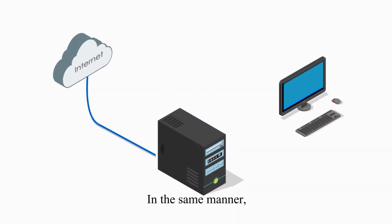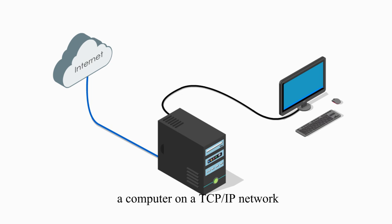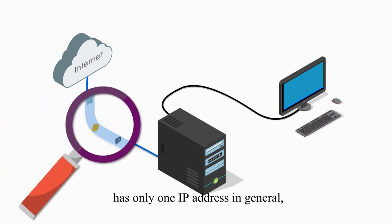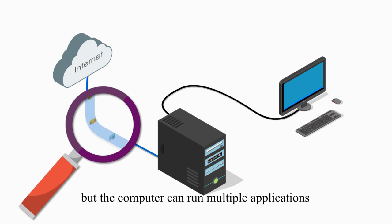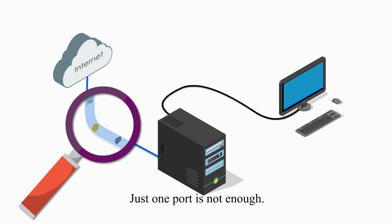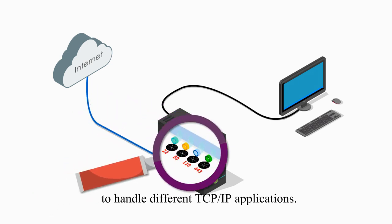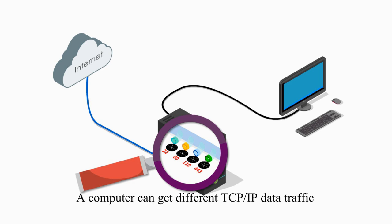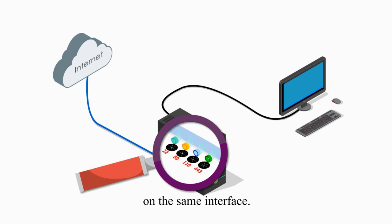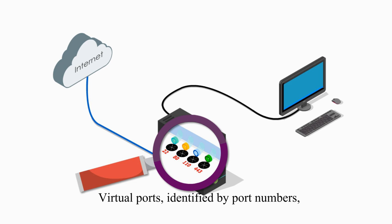We cannot use one port for everything. In the same manner, a computer on a TCP/IP network has only one IP address in general, but the computer can run multiple applications at the same time. Just one port is not enough. Thus, the computer needs different virtual ports to handle different TCP/IP applications. A computer can get different TCP/IP data traffic on the same interface, and virtual ports identified by port numbers are useful to tell them apart.